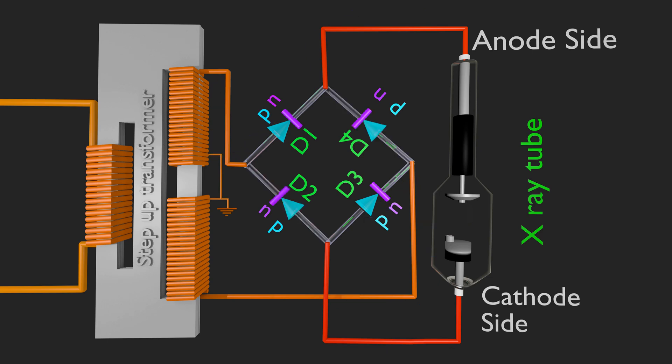Consider other half cycle of AC, upper pole of secondary winding at negative polarity in respect of lower side. Diode 1 will be reverse biased as negative polarity of it is connected to p side of D1. Hence, D1 cannot conduct here. Now D2 is in forward bias as negative polarity of it is connected to N side of D2. Cathode of X-ray tube will get negative polarity as it is connected through D2.